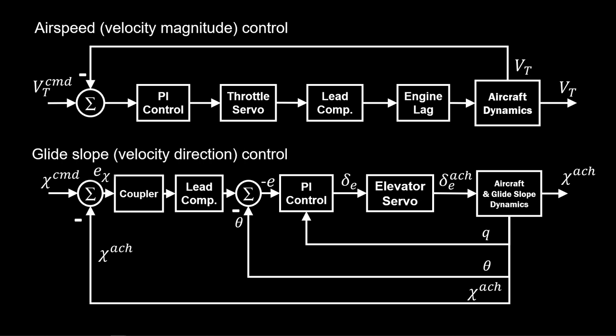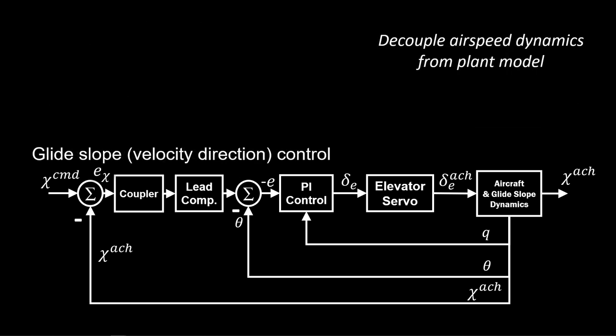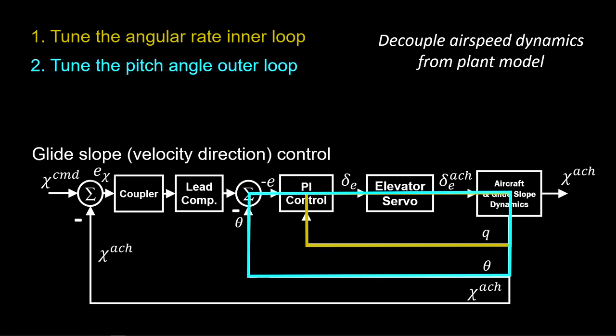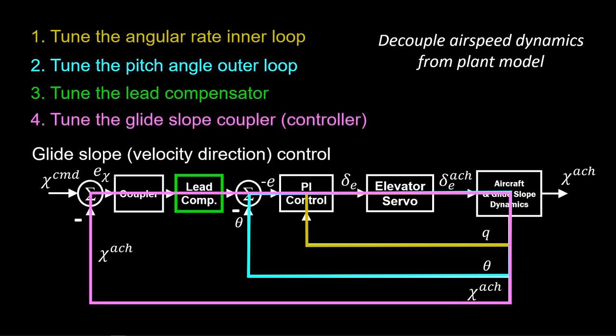This control architecture has several loops with multiple tuning knobs. We need a systematic approach to tune this multi-loop system, working from the inside out. For the glide slope, we first decouple the airspeed dynamics from the plant model. Focusing on short period and pitch angle dynamics allows us to address glide slope angle and control objectives: starting with the innermost angular rate loop to add damping, then the pitch rate loop for tracking performance, then setting the lead compensator to cancel the dominant pitch pole, and finally tuning the glide slope controller.